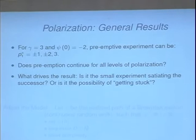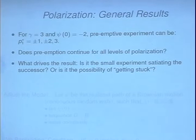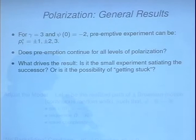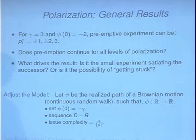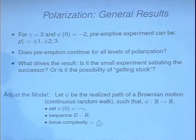The question then to ask is: does preemption continue for all levels of polarization, and what does the behavior look like as we become more and more polarized? A deeper question is: what's driving this effect? Is it the fact that by doing a small experiment, I head off a big experiment? Or is it the fact that by having a first experiment that fails, such that the successor backtracks or gets stuck at the status quo — is that what's driving the effect? So what I'm going to do is switch from the discrete random walk to the continuous case, to the Brownian motion. The logic and intuition is all the same, but to attack these more general questions, it's easier to use the smoothness of the continuous random walk.